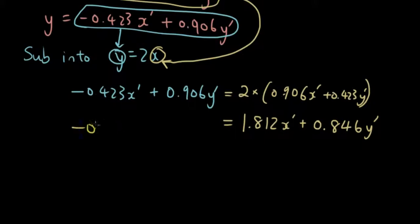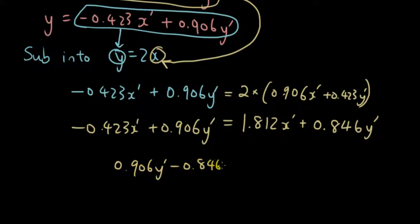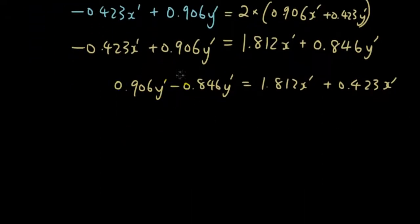And on the left hand side, I'm just going to copy it down again, and then I'm going to move all the y's onto the left, so I have 0.906y' minus 0.846y' equals 1.812x' plus 0.423x'. Move all the y's onto one side, all the x's onto the other side. And now let's simplify what's on the left, so I will get 0.06y' equals 2.235x'.